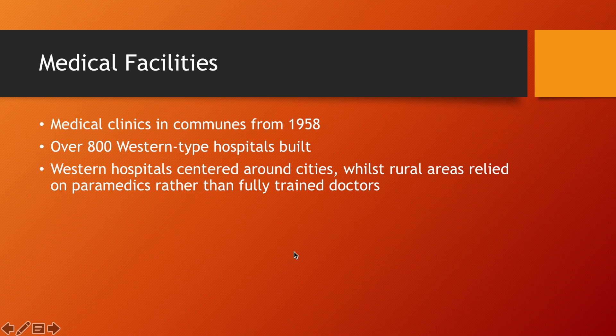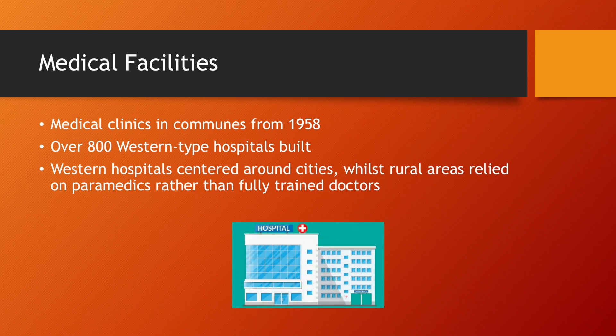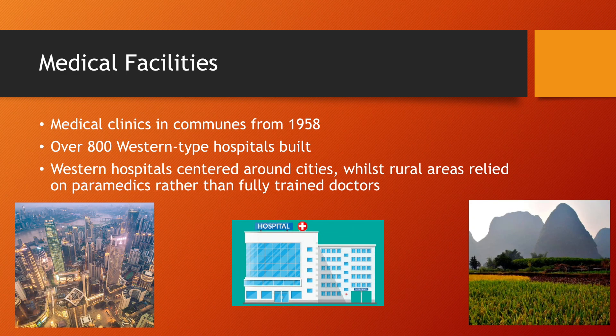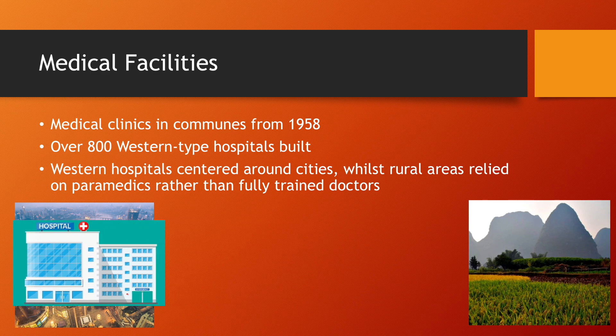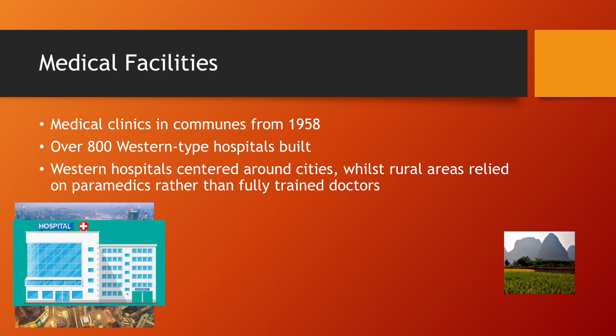Regarding medical facilities, the communes established in 1958 during the Great Leap Forward had medical clinics, so people had guaranteed access to health care, albeit very poor quality. But if you're looking at improvement, it was better than nothing. Over 800 western-type hospitals were built, but the limitation was they were mainly confined to the city, so rural areas did not experience significant improvement in health care quality.